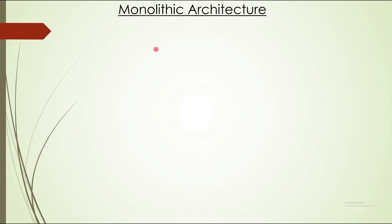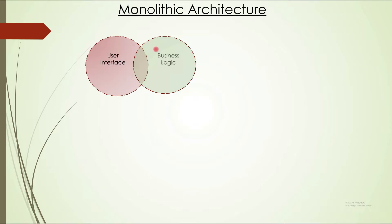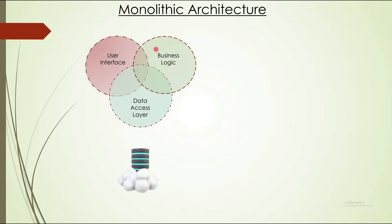So what is monolithic architecture? Any software we design will usually have one user interface, and then there will be some business logic. This business logic will be mostly connected with a data access layer, and this data access layer will be connected to a database. So you can see there are three or four different components in this monolithic architecture.